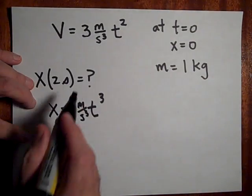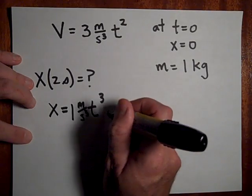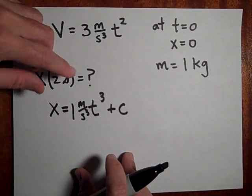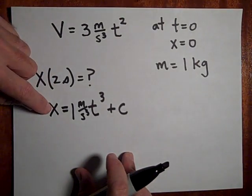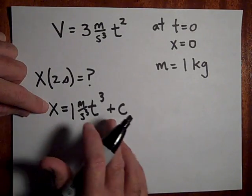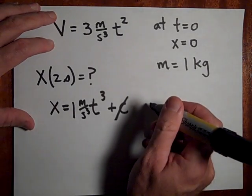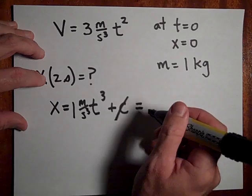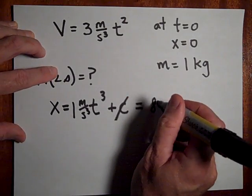See how that gives me, when I take the derivative I get that. Now let's, plus C. Okay, but at T equals zero we're told that X is equal to zero. So at T equals zero, X has to equal zero, so C is zero. Okay, so if I put in the number now, they want to know at 2 seconds, so it's 2 cubed is going to give me, see how the units work out to 8 meters.